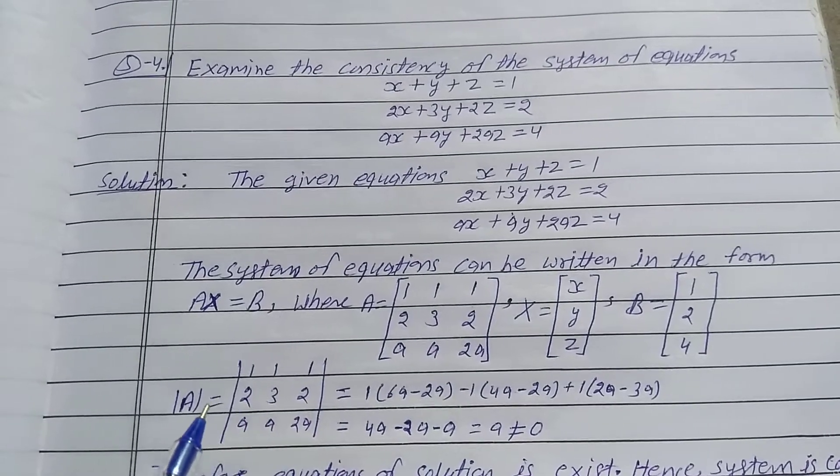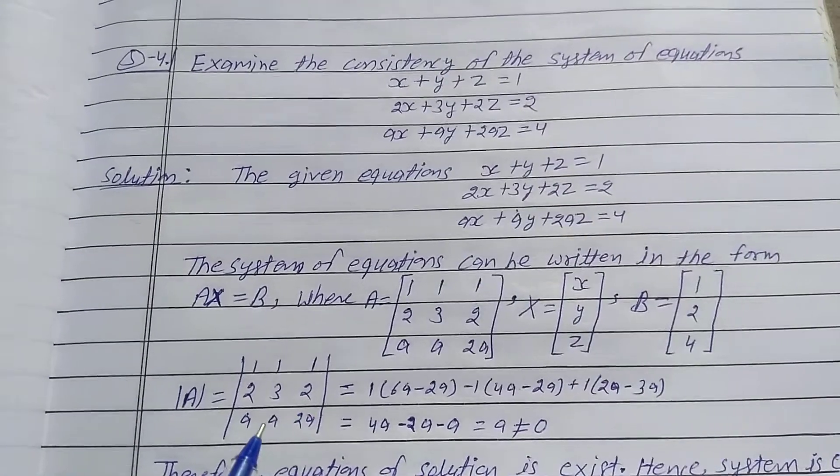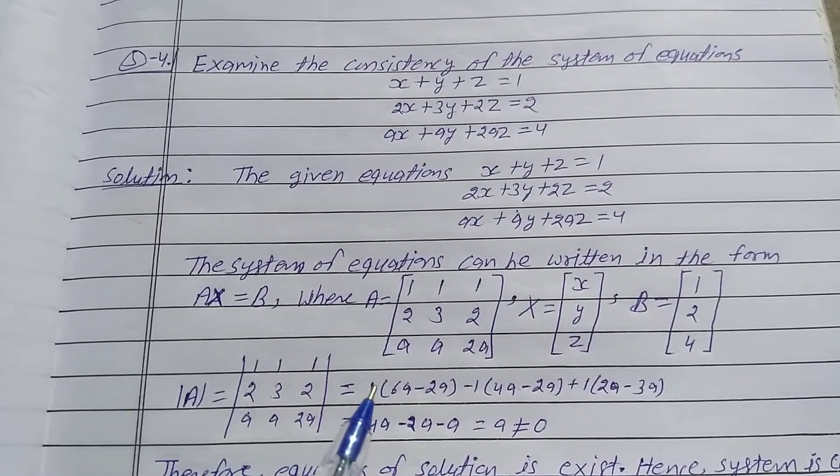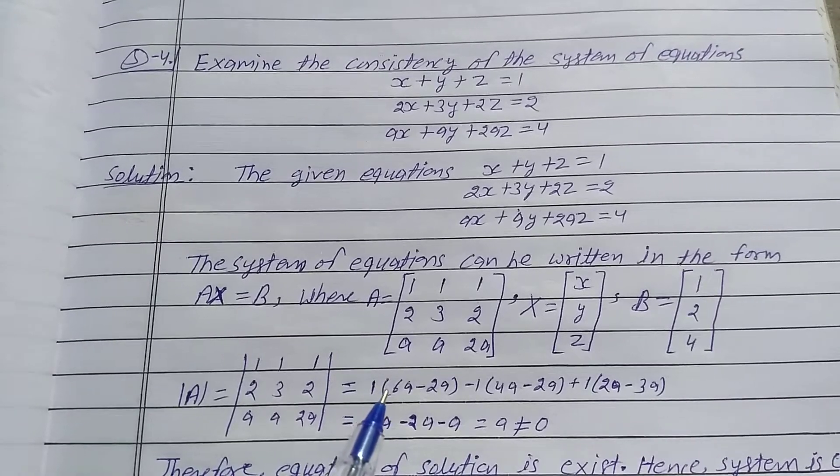Determinant of A is equal to the determinant 1, 1, 1; 2, 3, 2; a, a, 2a. Take 1 and evaluate the determinant by breaking it off.